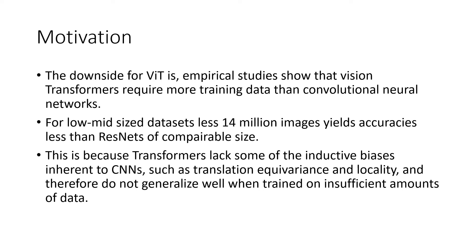However, there is a drawback to visual transformers: they are very annotation hungry. That is, they require training on a large annotated dataset. For instance, in the experiments performed in the breakthrough paper 'An Image is Worth 16x16 Words,' improvements on CNNs were only seen when trained on datasets of 14 million to 300 million images. This is because transformers lack some of the inductive biases of CNNs, such as translation equivalence and locality, and therefore do not generalize well when trained on insufficient amounts of data.